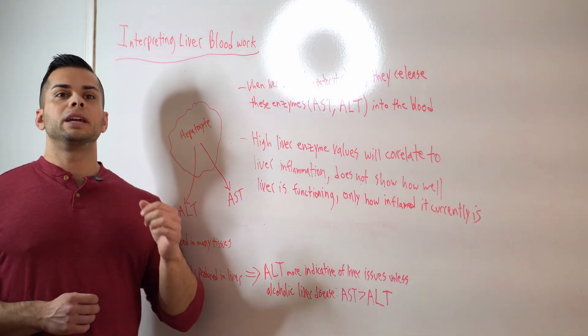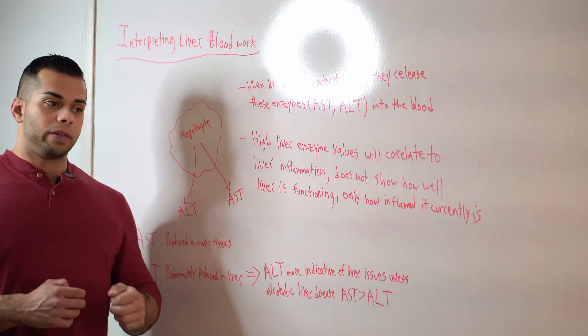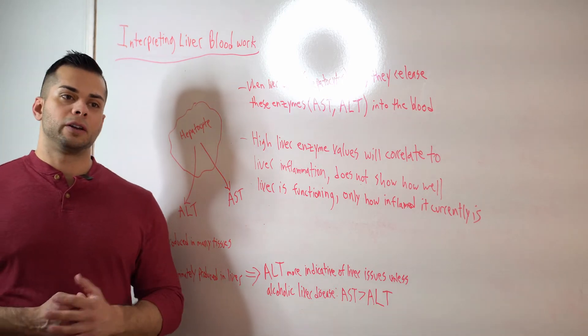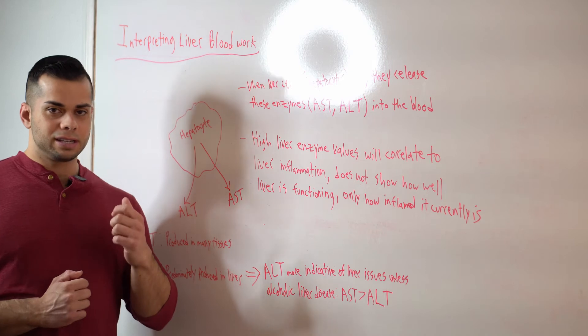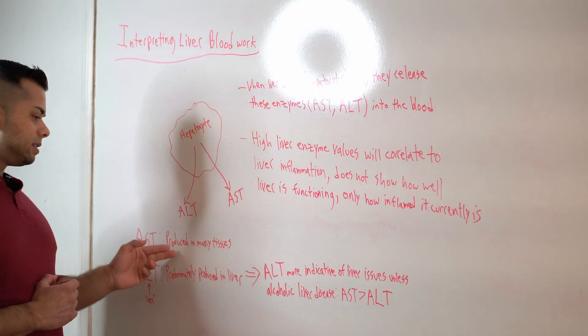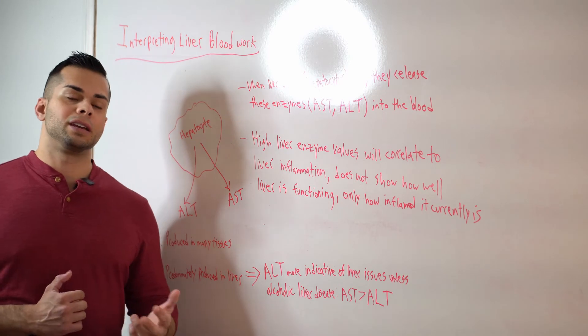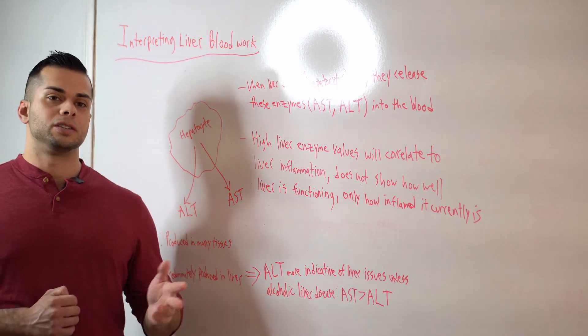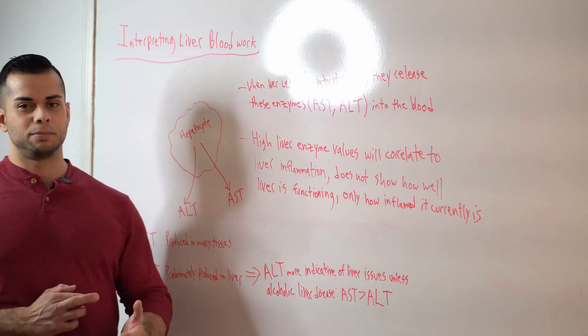So what this means is that if we get blood work back with high AST values or low or normal ALT values, it's not very likely that there is some sort of damage to liver going on because these AST values can also be correlated to things like muscle breakdown or other functions that can be going on in the body at the same time.